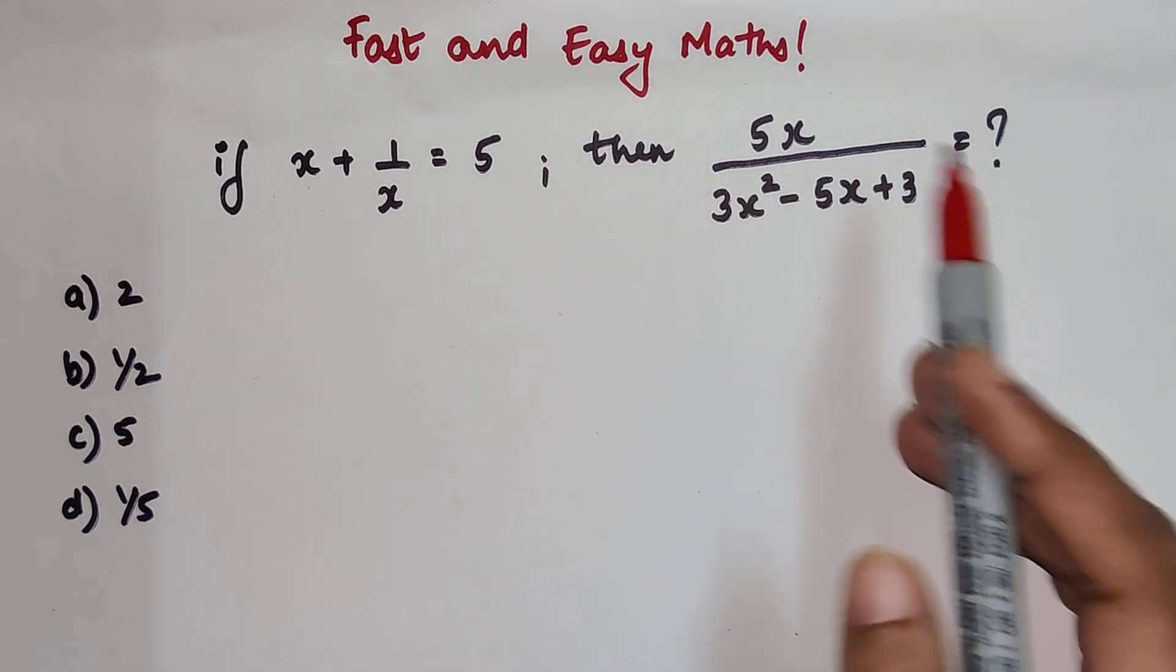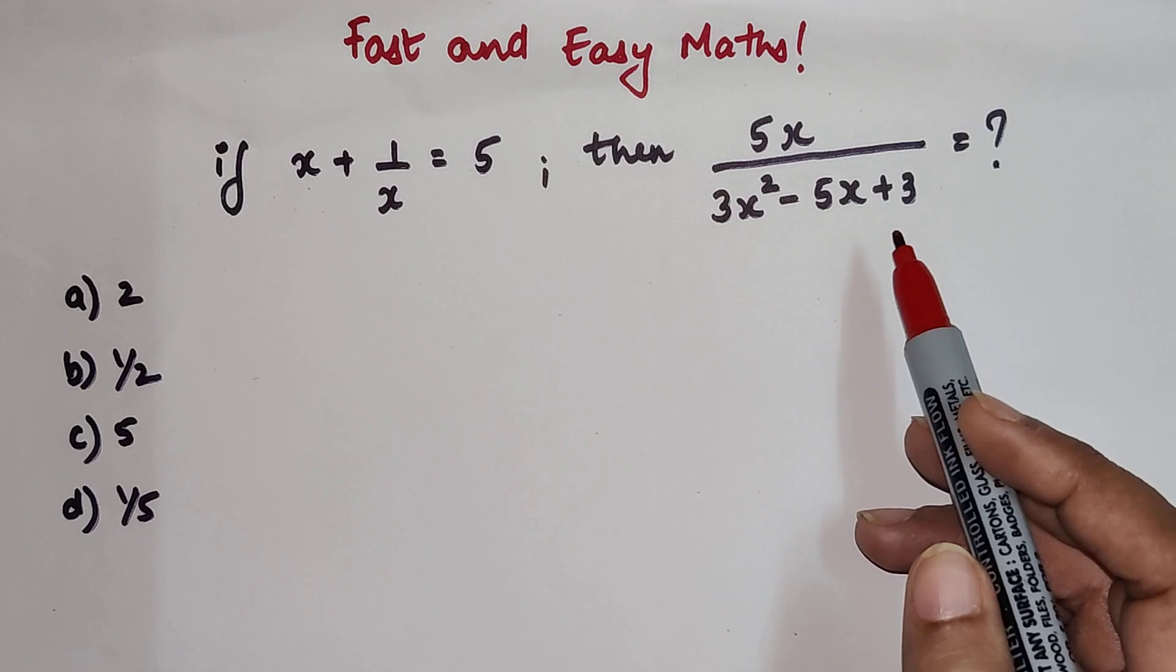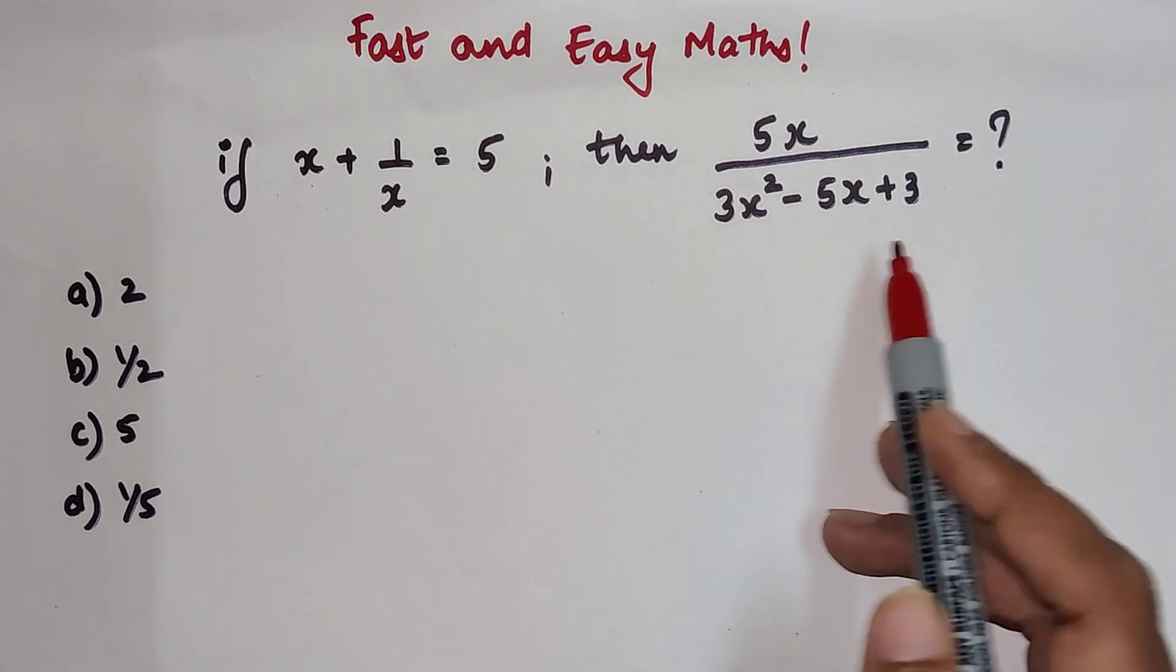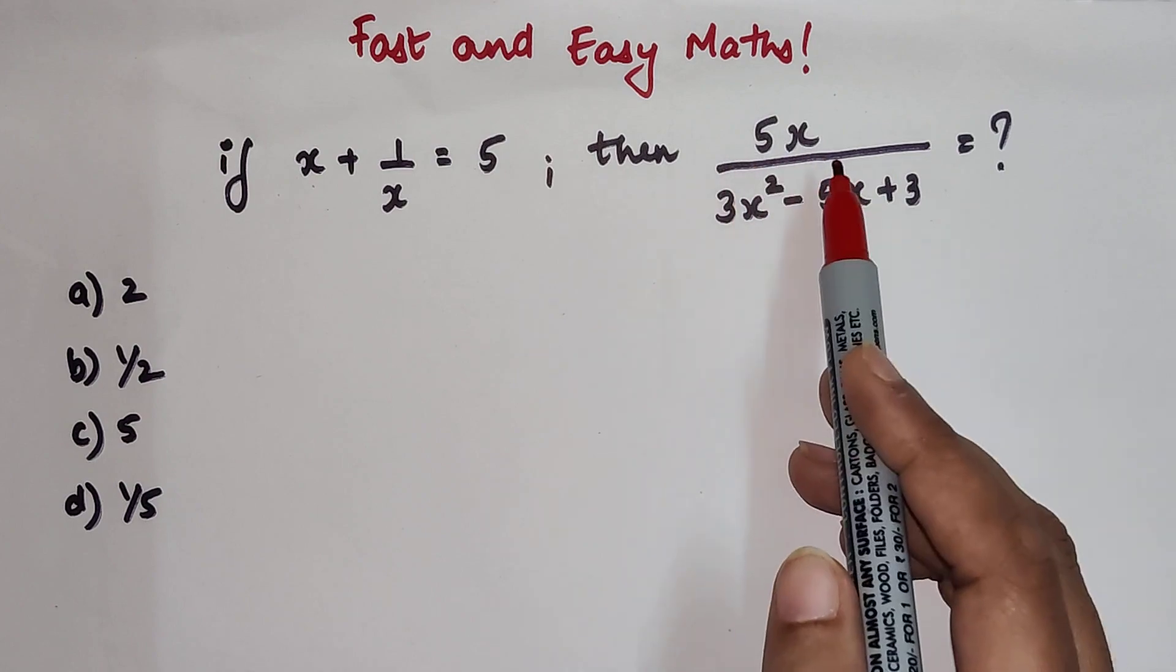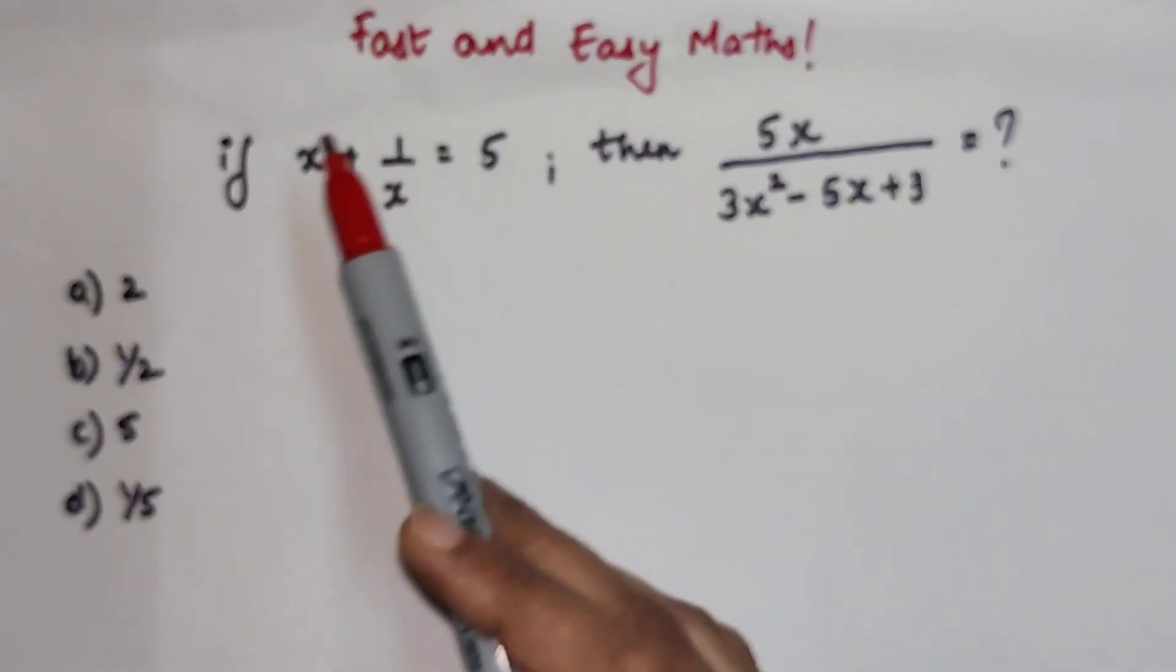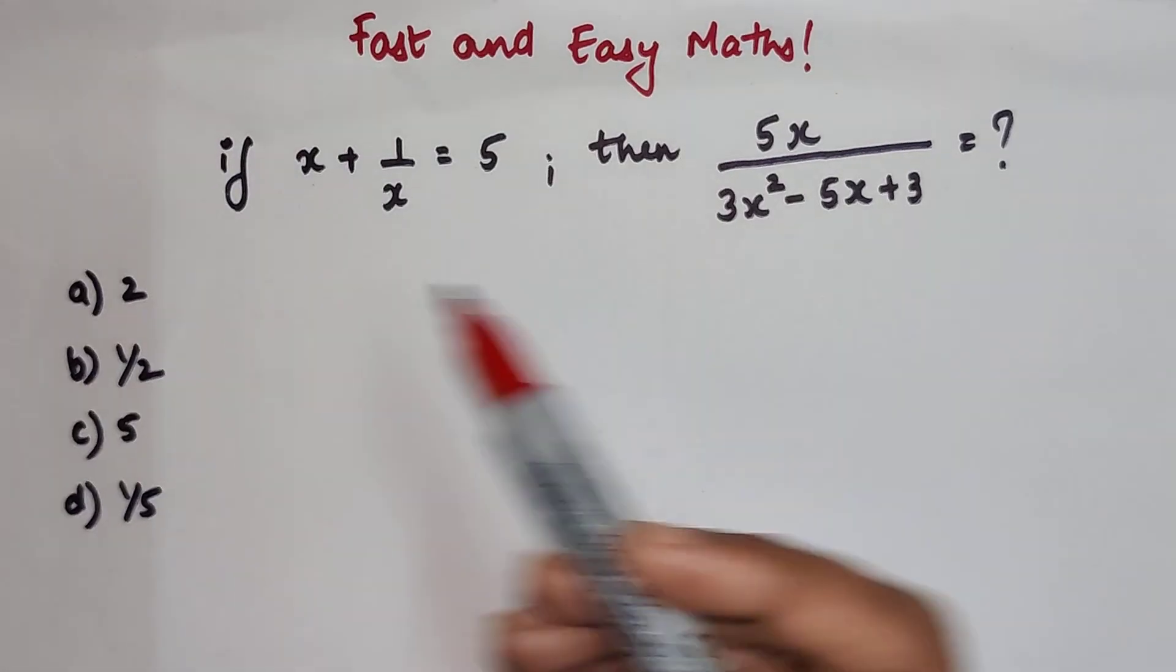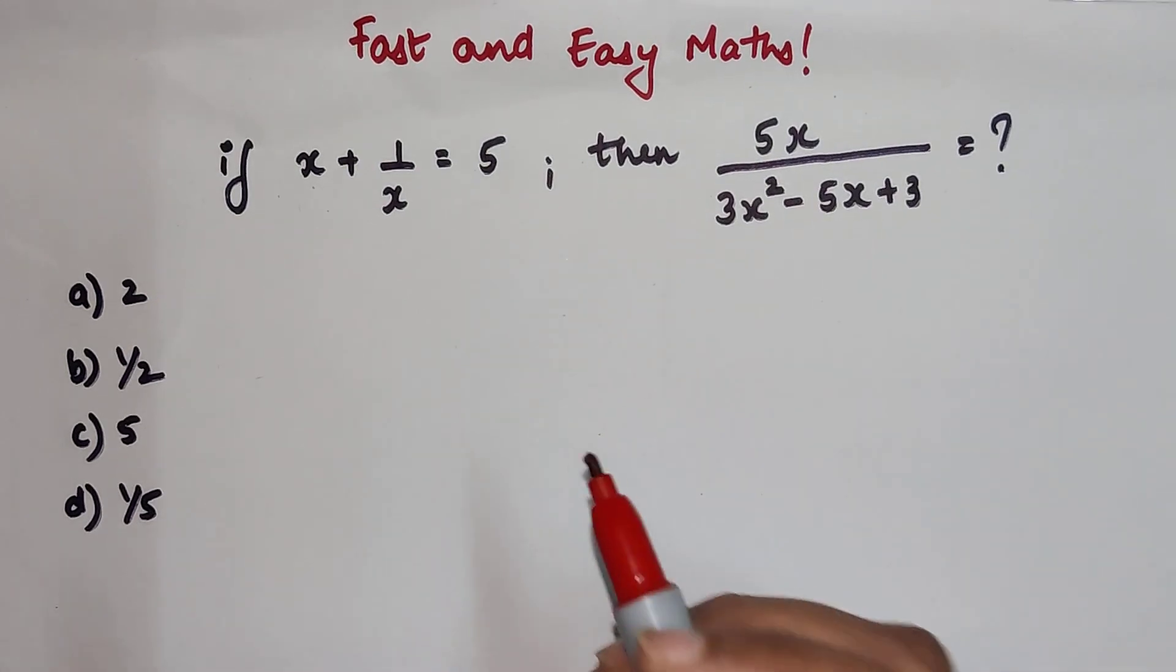Now this looks a bit tricky to understand because here we have a quadratic, and over here we have just 5x in the numerator. And the data given is a bit different than what we are supposed to find. So what do we do in such a case?